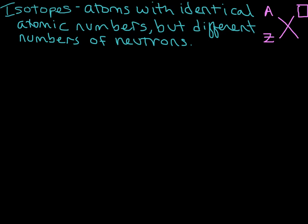Let's start with an example for neon. Here's one of the isotopes of neon: neon-21. We're going to figure out how many protons, neutrons, and electrons this species has. The first thing we do is look on the periodic table and find neon. From there we can get the atomic number — it's going to be at the top. The atomic number for neon is 10. We get that from the periodic table, so that's Z.